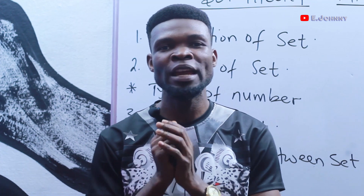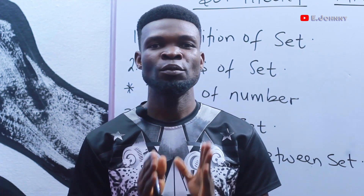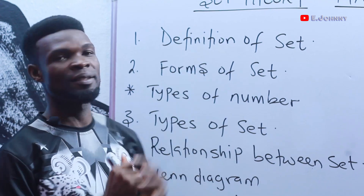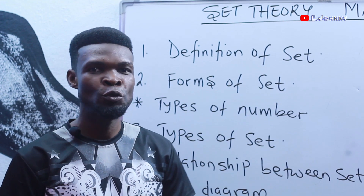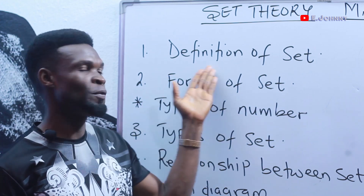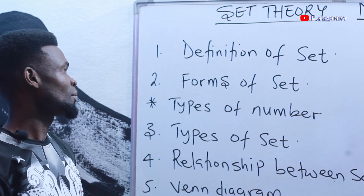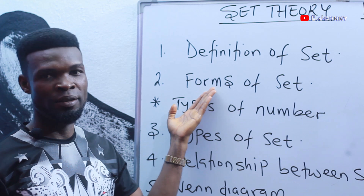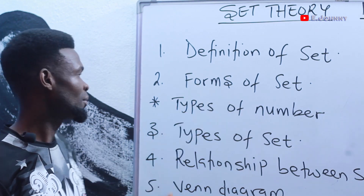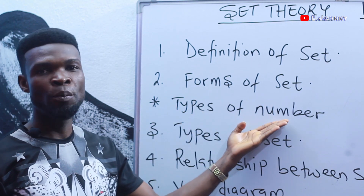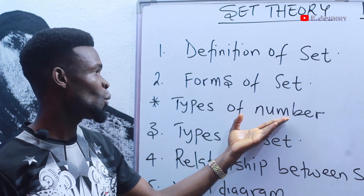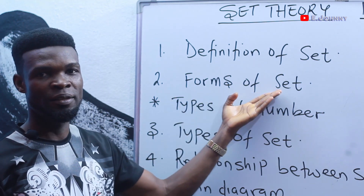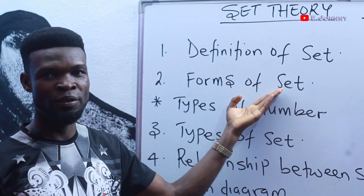For today, I came with a different and fresh topic. The topic is sets. At the end of my teaching, every student must be able to define sets and know the forms in which sets exist. Then we look at types of numbers, because it will really help us when we get to forms of sets — that is, listing the elements of sets.